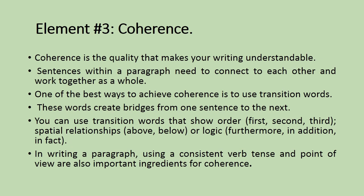You can use transition words that show order — these are called first, second, and third. Another type of transition words are spatial words such as above and below. Some transition words are used to create logic, such as furthermore, in addition, and in fact. Using a consistent verb tense and point of view are also important ingredients for coherence.